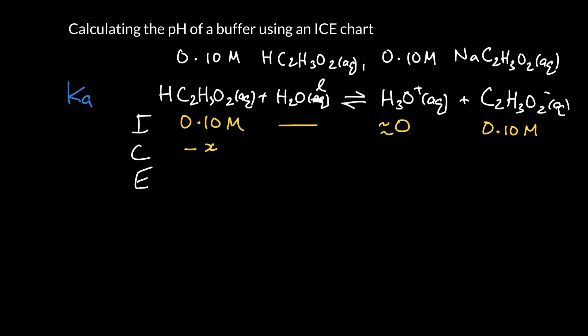So since we've got 0 hydronium on the right, we know it has to shift from left to right, so we have to make some of that H3O+, so it's going to go minus x, plus x, plus x. And then at equilibrium, if we leave off the units, it'll be 0.1 minus x, x, and 0.1 plus x.